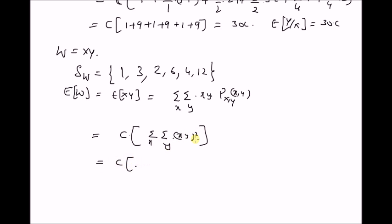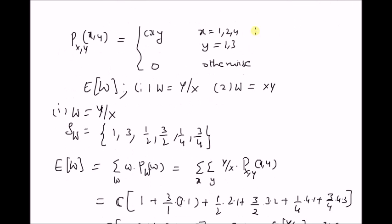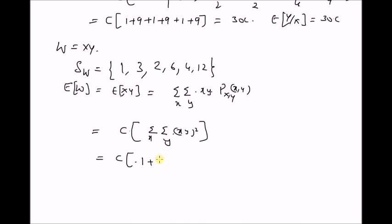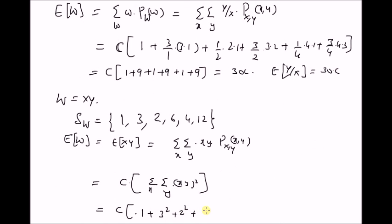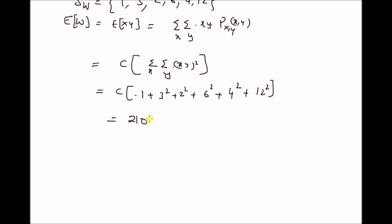This equals C times: 1² + 3² + 2² + 6² + 4² + 12², that is 1 + 9 + 4 + 36 + 16 + 144 = 210C. Therefore, the expected value of x·y, that is the correlation between random variables x and y, is equal to 210C.